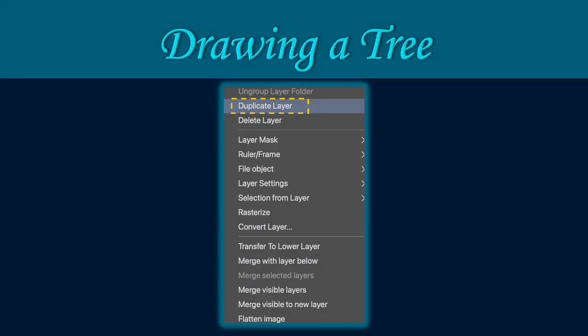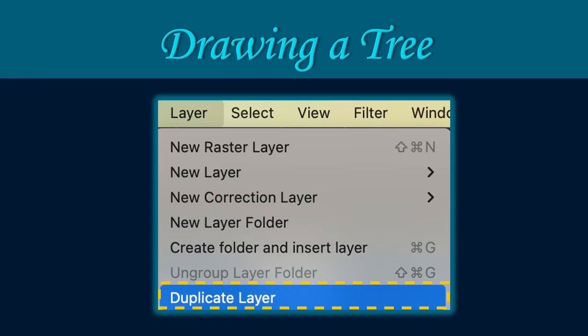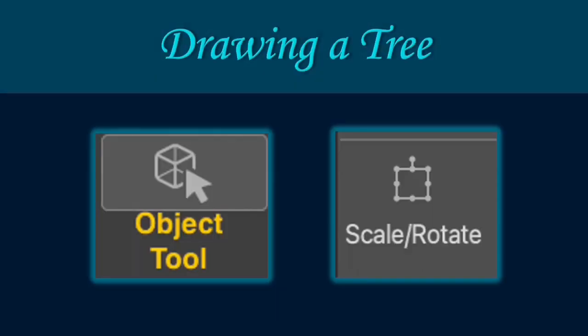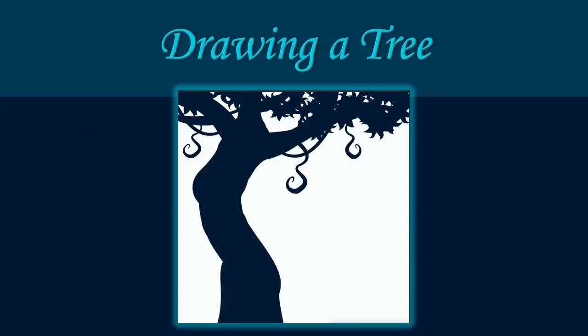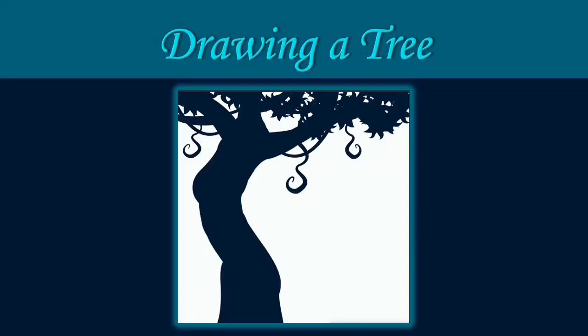Draw the leaves using the curve and the correct line tool to transform the lines into your desired figure. You may use a duplicate layer to create a copy of the leaves — click the layer on the commands menu bar then click duplicate layer. Use the object tool scale and rotate to move and size the leaves. Here is a sample drawing of the tree with hanging branches and the leaves.